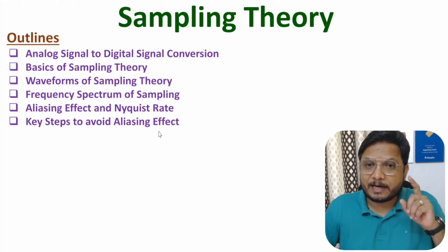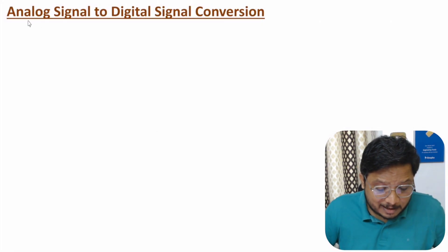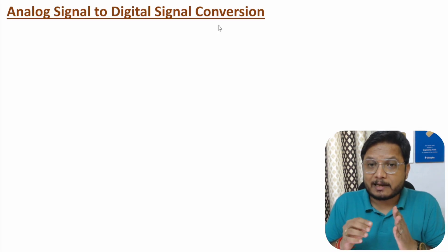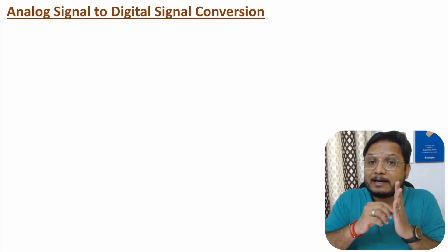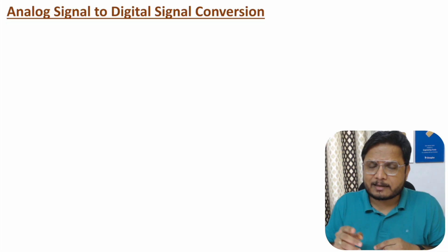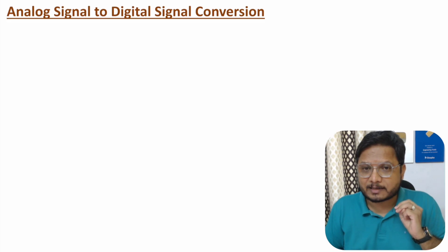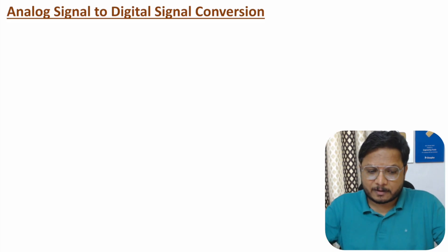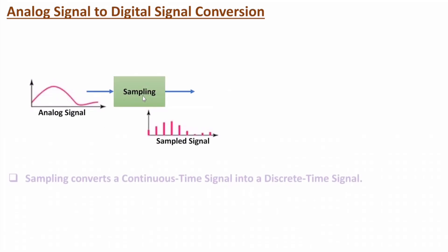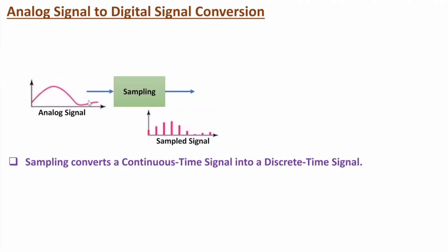Let us start with the first agenda: analog signal to digital signal conversion. One should know that an analog signal is continuous in time and continuous in amplitude. To convert an analog signal into a digital signal, there are three essential steps. In the first step, we will be doing sampling, converting a continuous time signal into a discrete time signal.